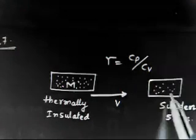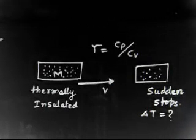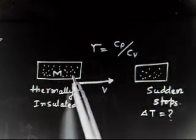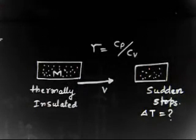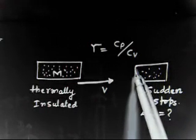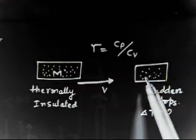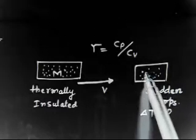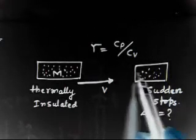We have to find the increment in temperature due to the sudden stoppage. Let us understand why there is an increment in temperature. The vessel is moving, so the gas molecules are also moving. Suddenly the vessel stops, but the gas molecules still have velocity due to inertia. So what will happen? These molecules will collide with the rear wall.